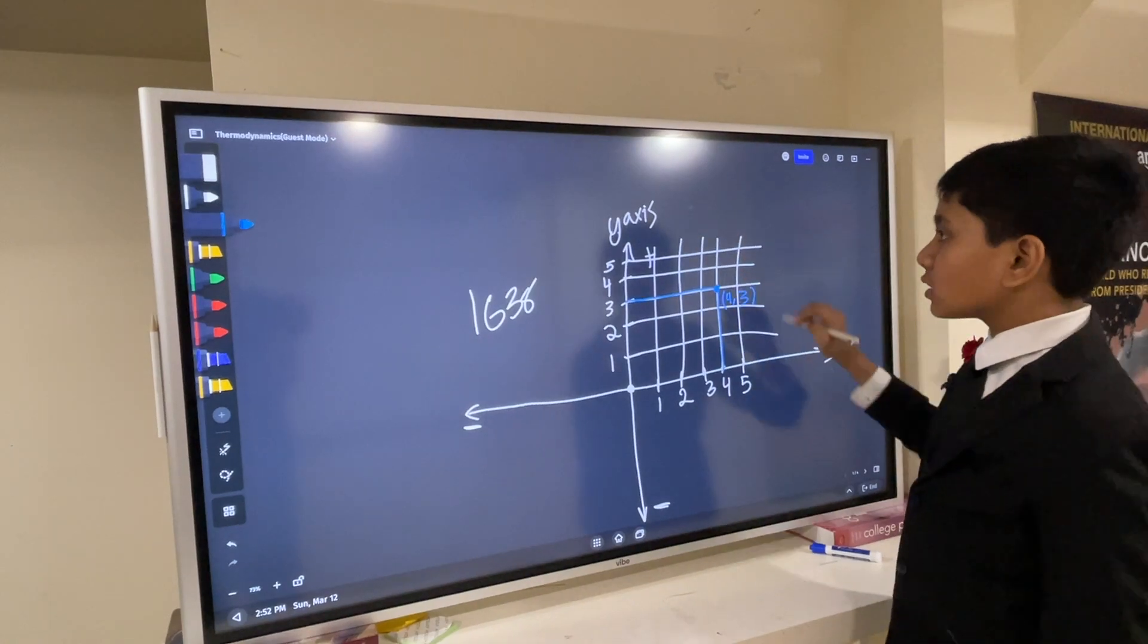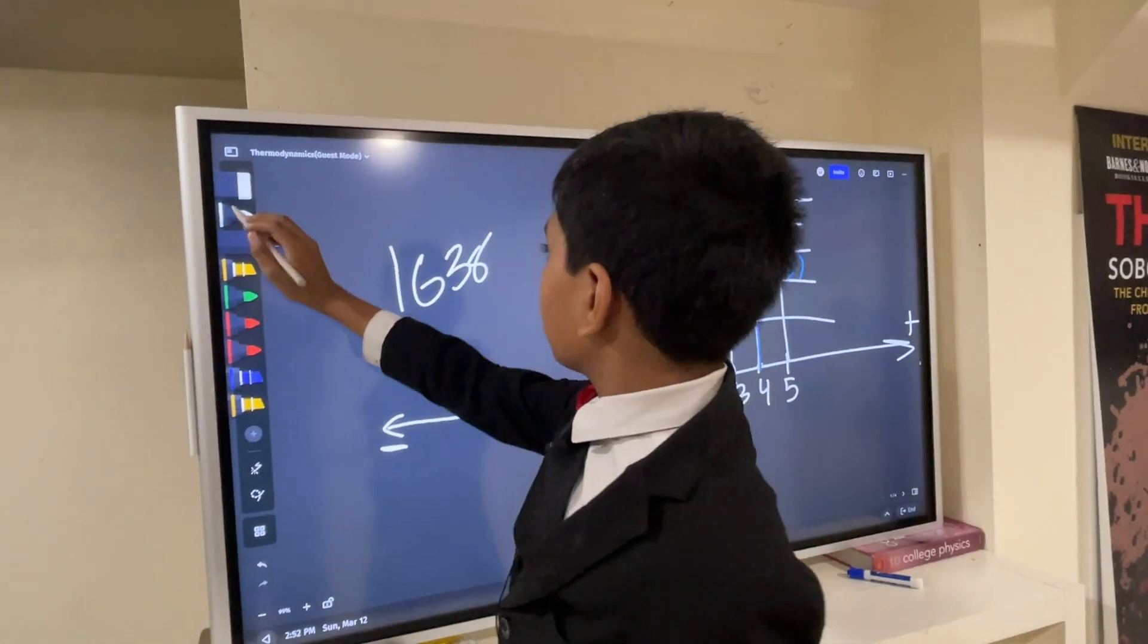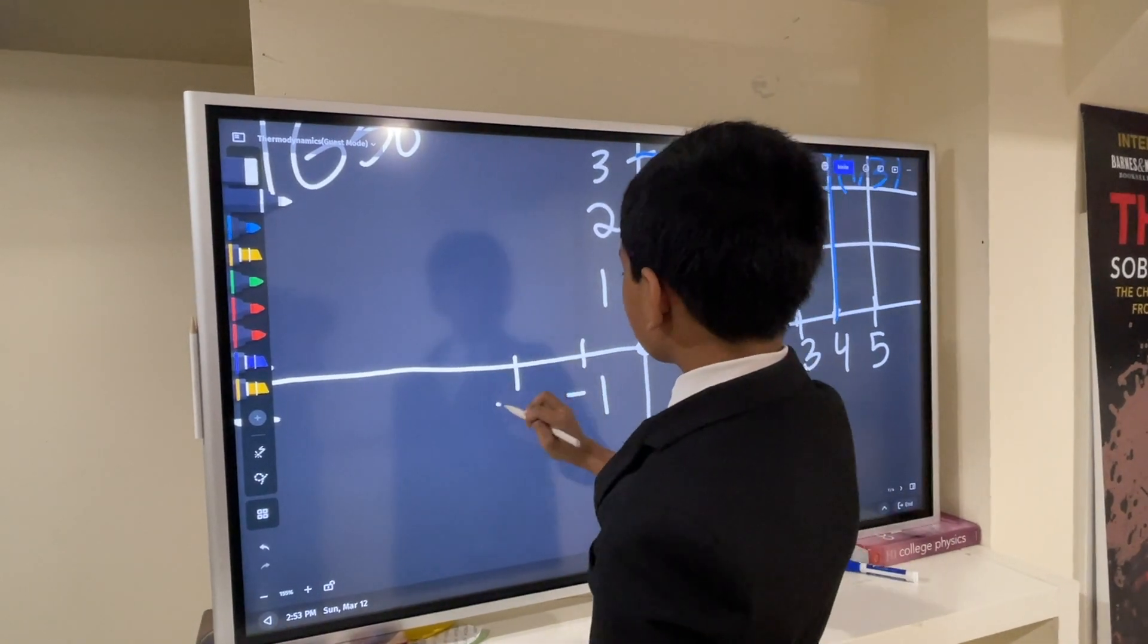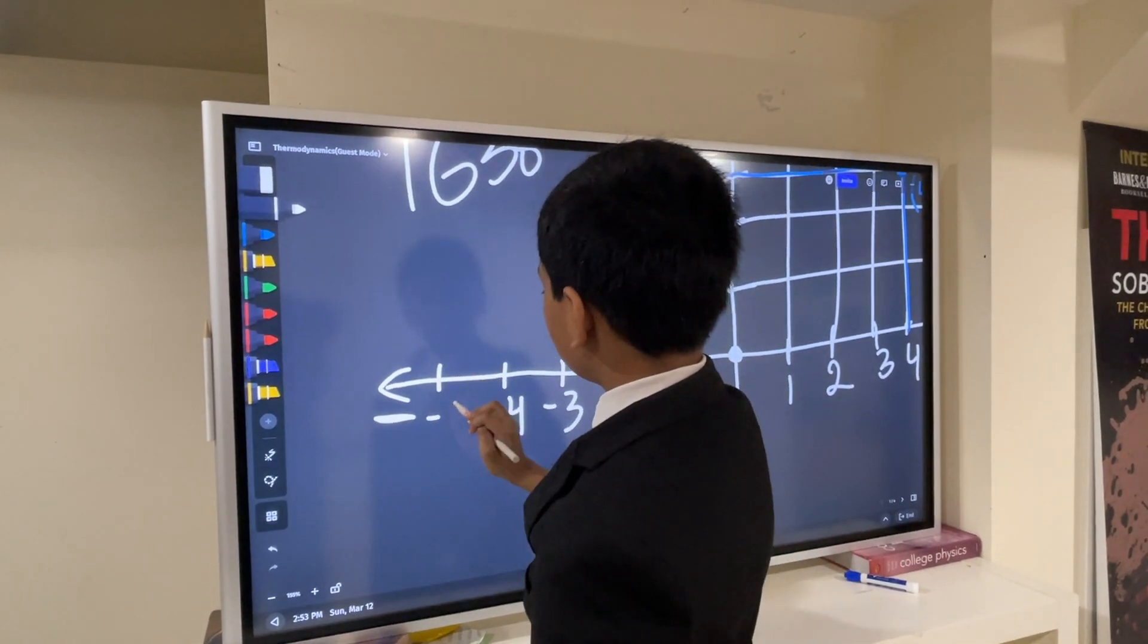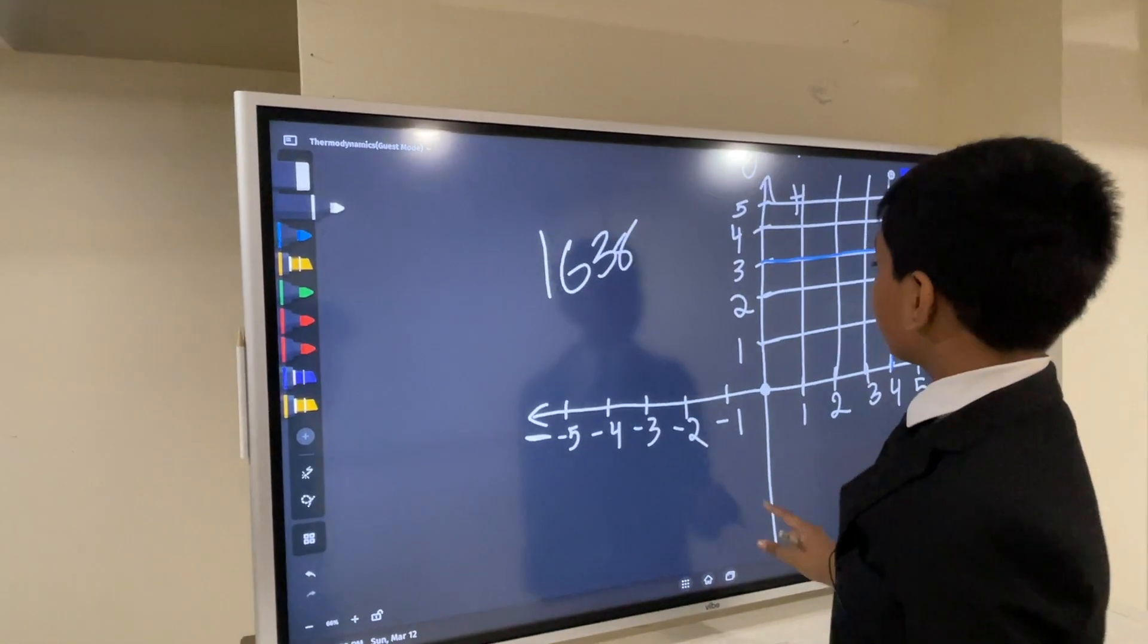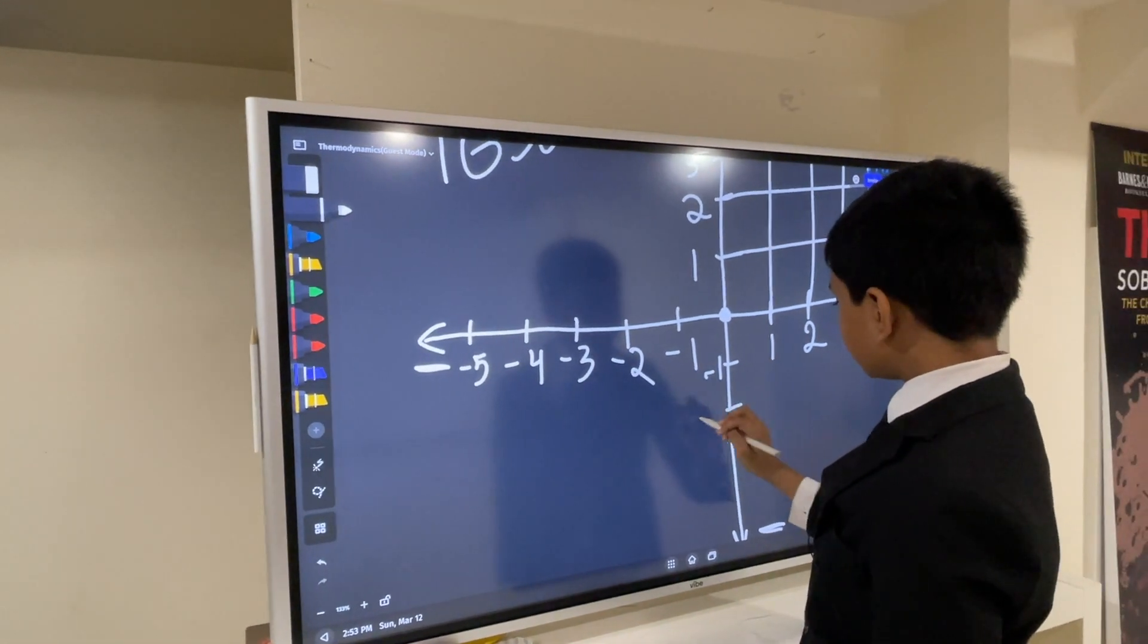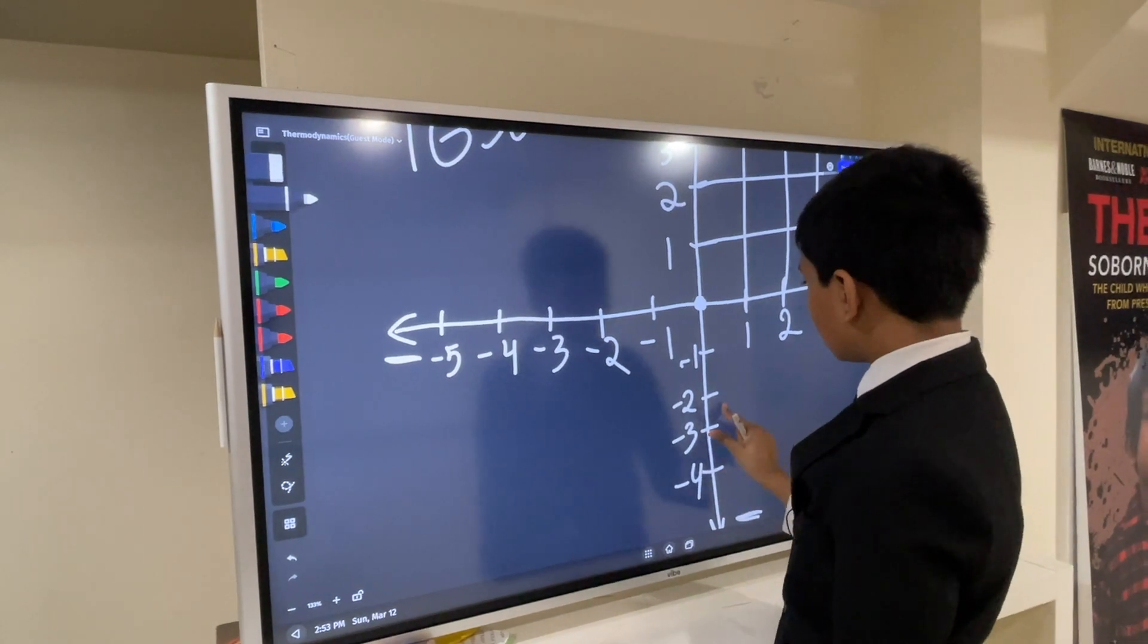Now, this is just one fourth of the coordinate plane. There's also an entire other side, where we have the negative numbers. Remember, the number line has a negative side, too? Well, the same thing with the coordinate plane. And the y-axis has negative numbers as well.